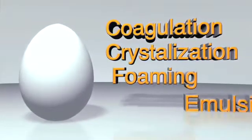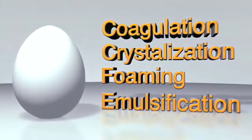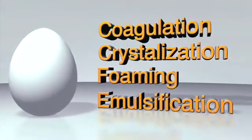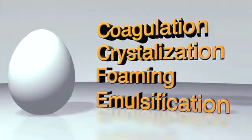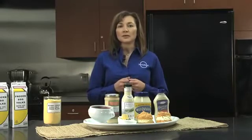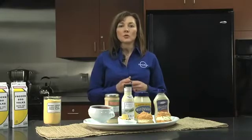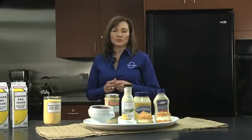All of these egg functions — coagulation, crystallization, and foaming, as well as the focus of this module, emulsification — contribute to smooth and creamy textures in foods. Eggs do all this naturally. Smooth and creamy products can derive their texture from eggs. Each egg example contains one of the four functions that contributes to texture: coagulation, crystallization, foaming, and emulsification.